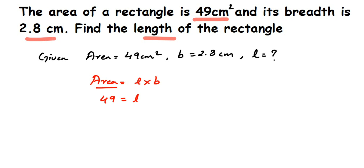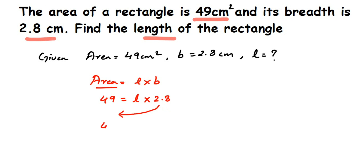So 49 is equal to L multiplied by 2.8. I'm going to transpose 2.8 to the other side to find the length value. I'll write the units at the end. When transposing, a number in multiplication comes into division on the other side. So it becomes 49 divided by 2.8 is equal to L.